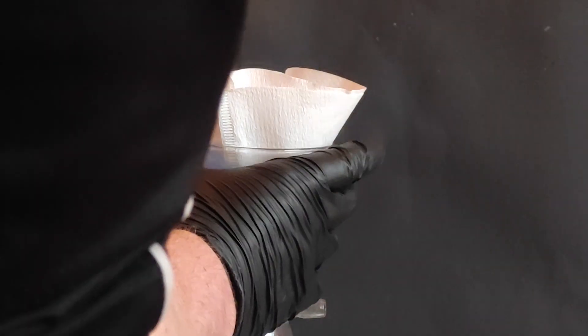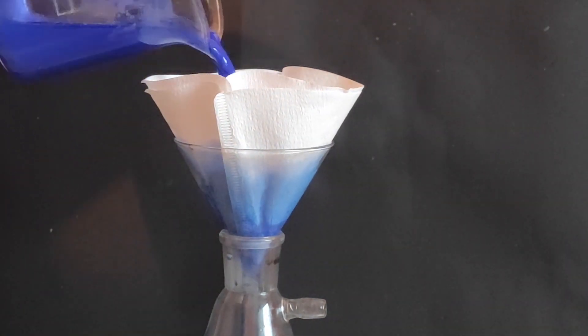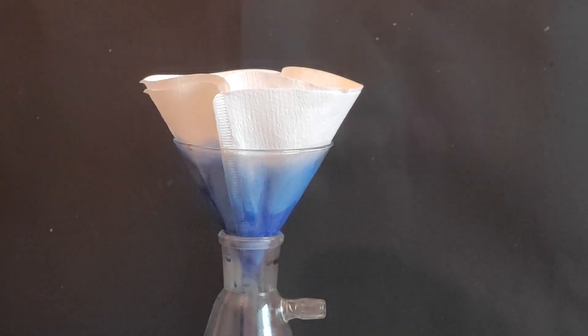Next the solution was gravity filtered, however I recommend vacuum filtration. If you want to have a higher yield, you can put the ethanol tetraamine solution into a fridge overnight and more tetraamine should crystallize.